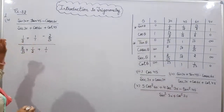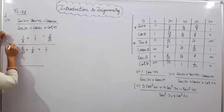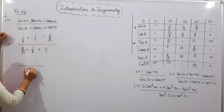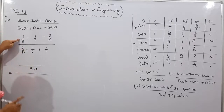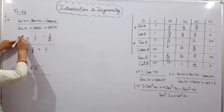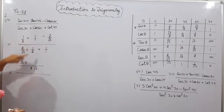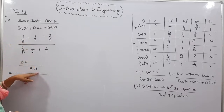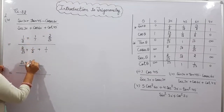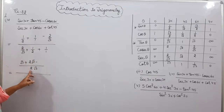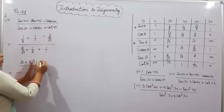Take LCM of the numerator. LCM of 2, 1, and √3 is 2√3. Dividing 2√3 by 2 leaves √3; √3 × 1 = √3. Plus dividing 2√3 by 1 gives 2√3; 2√3 × 1 = 2√3. Minus dividing 2√3 by √3 gives 2; 2 × 2 = 4. So the numerator becomes √3 + 2√3 − 4 = 3√3 − 4, all over 2√3.